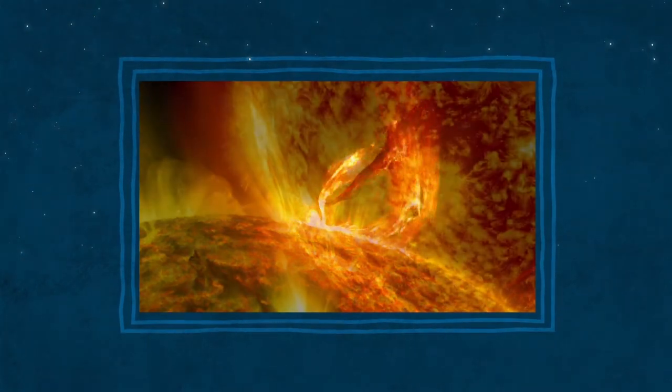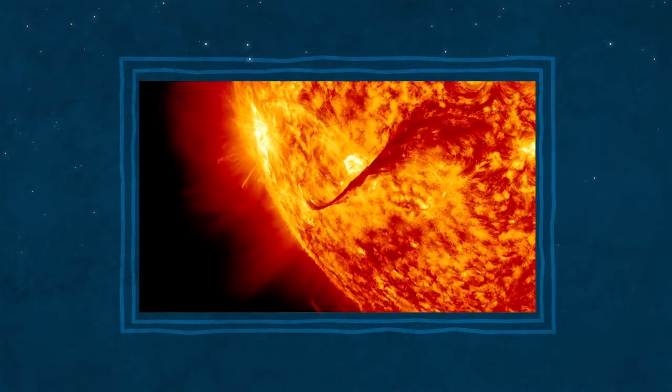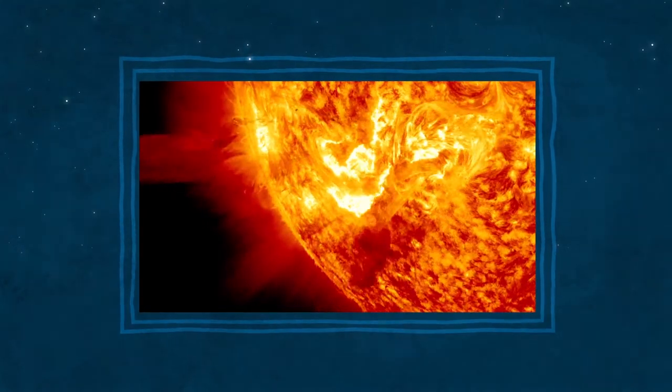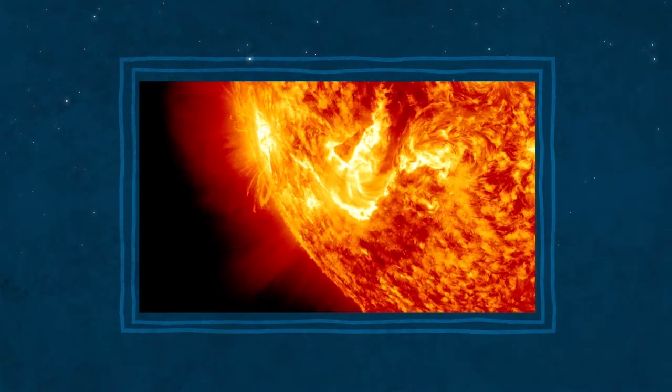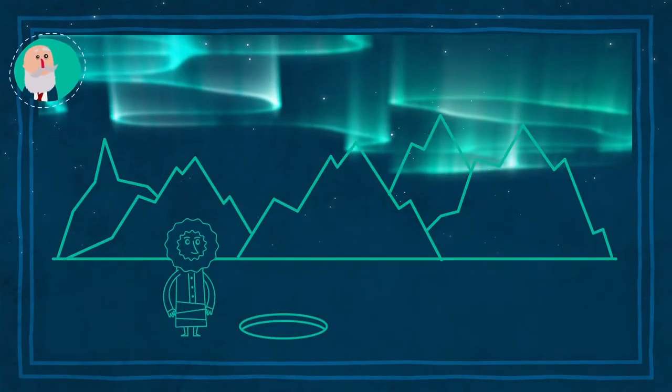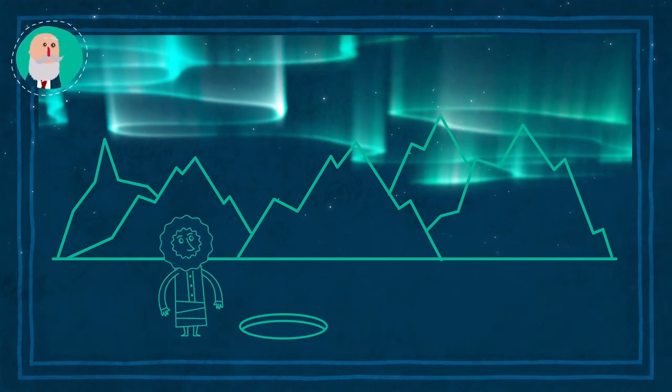Algunas fulguraciones provocan tormentas solares, ráfagas de partículas cargadas que viajan a través del espacio a gran velocidad y pueden llegar a la Tierra. Al entrar en la atmósfera terrestre cerca de los polos, generan las auroras.